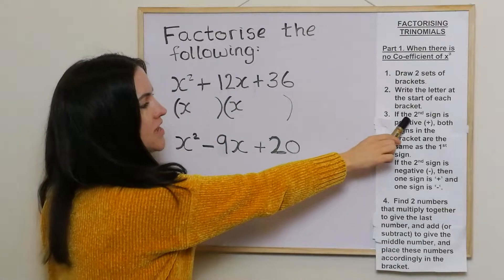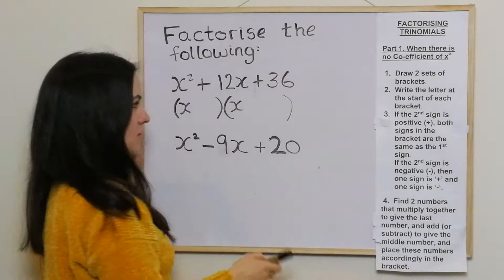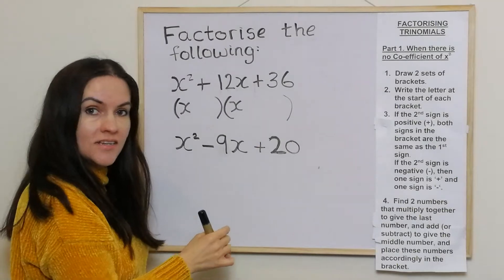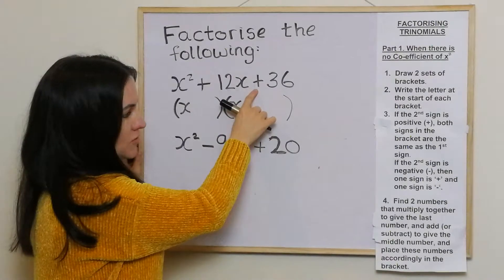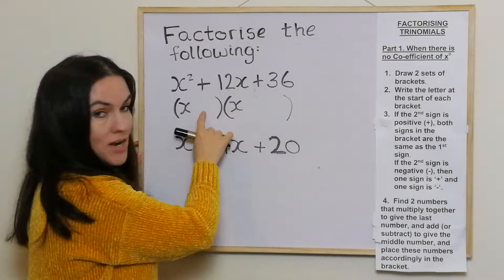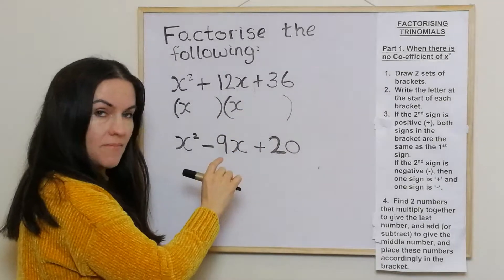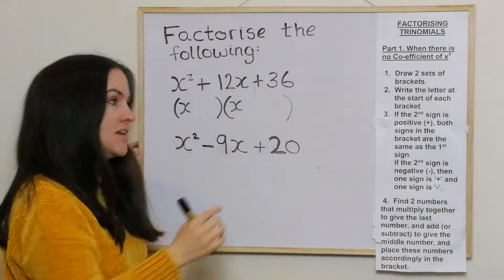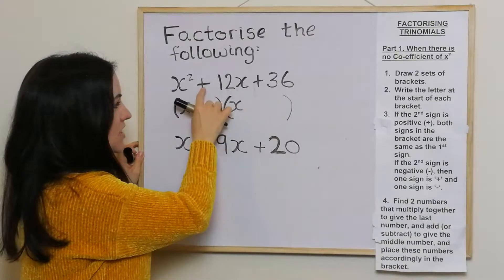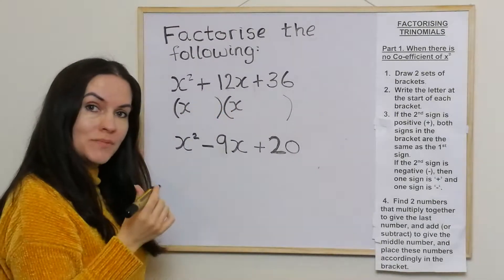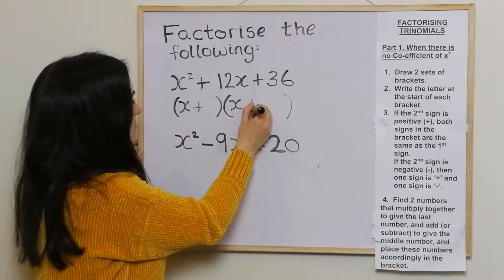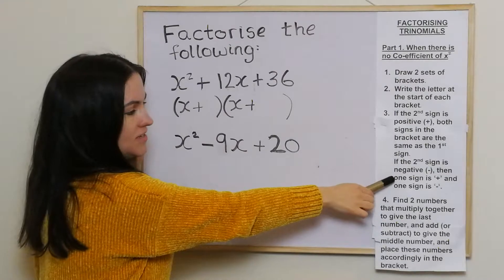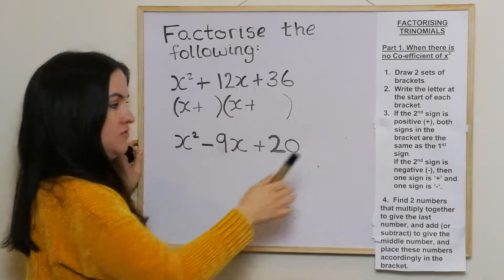In step three, if the second sign is positive — that's the first sign and that's the second sign — both signs in the brackets are the same as the first one. So if the second sign is positive, these two signs will both be positive. If the second sign is negative, then one sign is positive and one sign is negative.